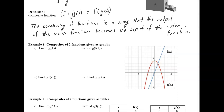We want to find f of g of 1. First, we find the output of g of 1 — looking at the red function where input is 1, the output is 3. So g of 1 equals 3. That means we need f of 3, because the output of the inner function g becomes the input of the outer function f. Looking at f at x equals 3, it's way up at 9. So f of g of 1 equals 9.